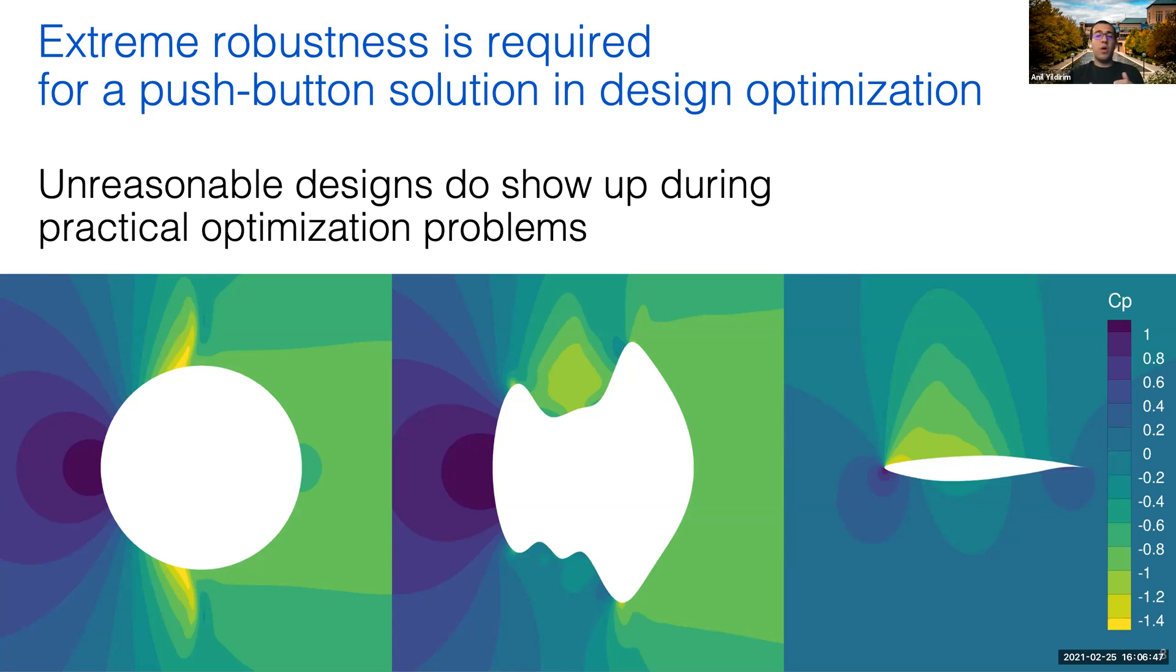However, in that example we already start from a good design. But what if we have no design intuition? For example, in the figure here in the bottom left, let's say we start from a circle instead of an airfoil. To start from this initial design and still converge to the optimal airfoil shape, the optimization algorithm goes through intermediate designs as you can see in the middle below. To get this push-button solution where we start with zero design intuition, the optimization framework needs to be able to handle these extreme cases.